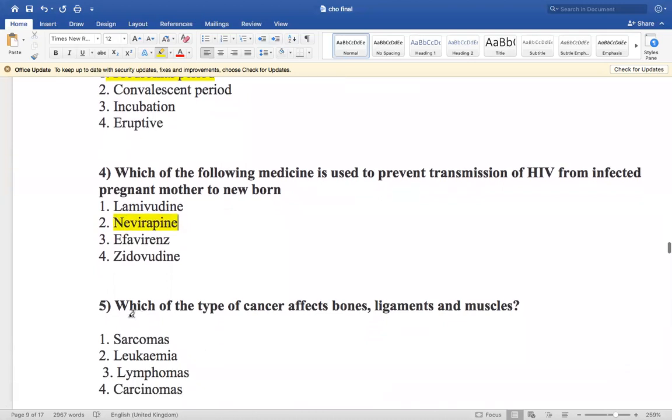Now the next question is: which type of cancer affects bones, ligaments, and muscles? Sarcomas, leukemia, lymphomas, or carcinoma? So the cancer that affects bones, ligaments, and muscles, we call it sarcomas.